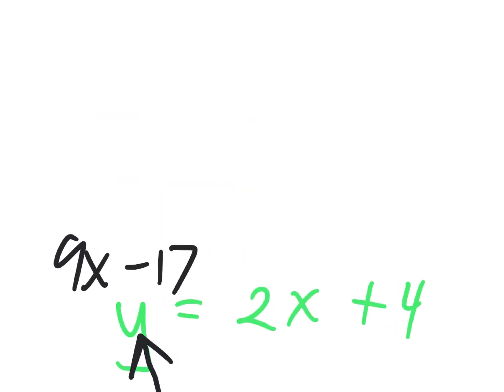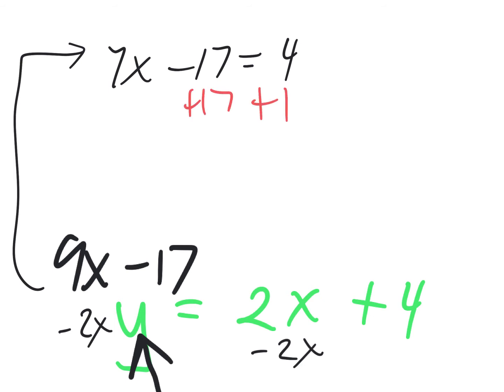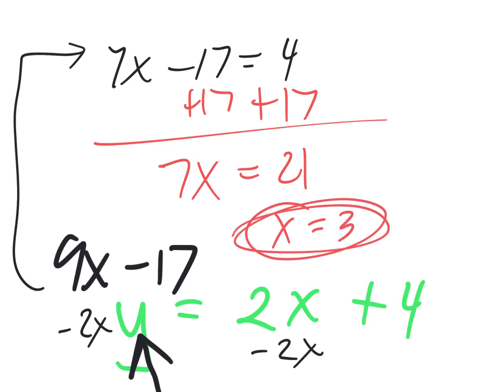It would be minus 2x. Minus 2x on both sides. I'm going to do that, and then I'm going to write the answer up above, up here. Give myself more room to work. 7x minus 17 equals 4. Next up. You then add 17 to both sides. Excellent. 7x equals 21. That worked out nice. x equals what? 3. Can I stop there?